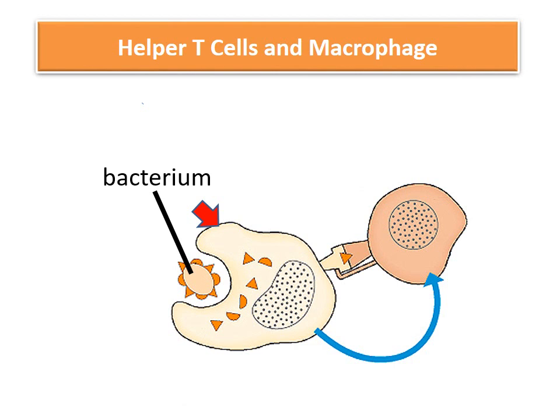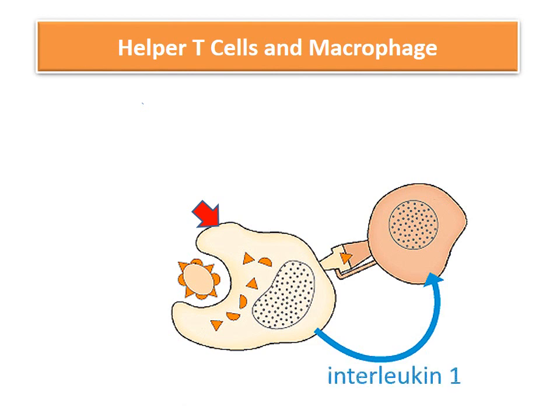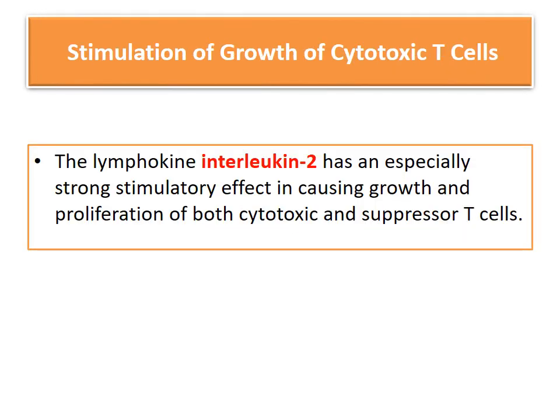The macrophage takes up the bacterium, processes it, and presents the bacterial antigens to the helper T cells via the T cell receptor in combination with MHC class 2 protein. The macrophage secretes interleukin 1 to activate the helper T cell. When activated, the helper T cell in turn activates the macrophage and increases its phagocytotic ability, thus playing a part in innate immunity.